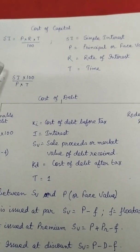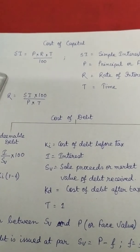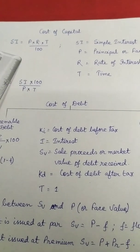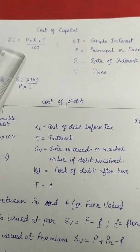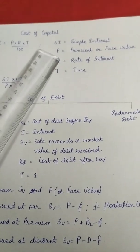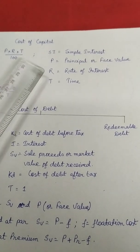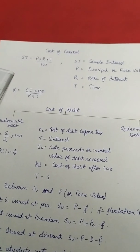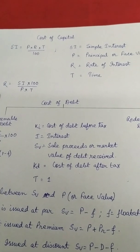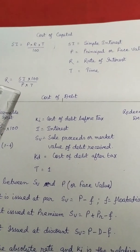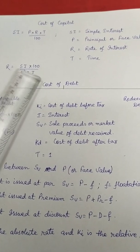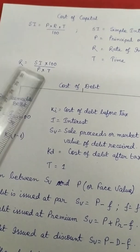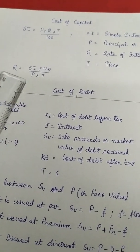All of you know how to compute simple interest: SI = PRT / 100. Here we have four parameters — interest, principal or face value, rate of interest, and time. Interest is computed on the face value. To calculate R, it is derived by cross-multiplying SI and 100 and dividing by P and T. This concept is used when we compute cost of debt or cost of equity.